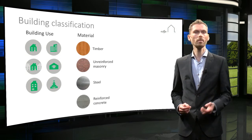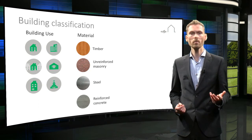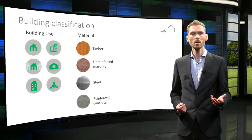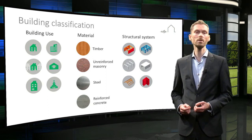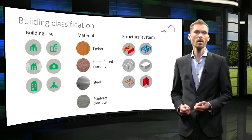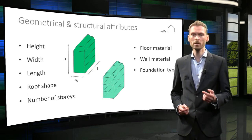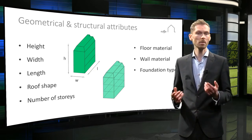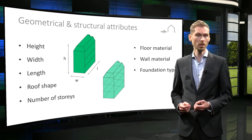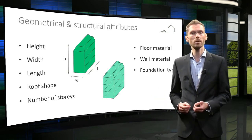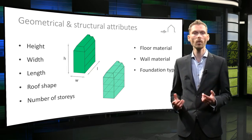Subsequently, you can divide the building groups by materials such as timber, masonry, steel, and reinforced concrete buildings. This is closely related to the last attribute which focuses on the structural system. Within these groups, further subdivision is possible to allow for more accurate assessment, using geometrical attributes to identify differences in building dimension and shape, and structural attributes such as building elements identifying floor and wall materials.